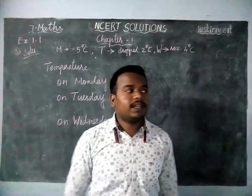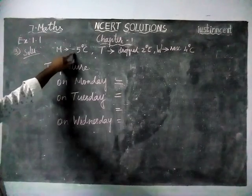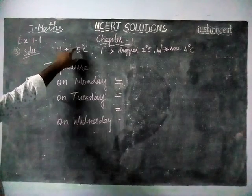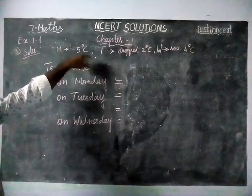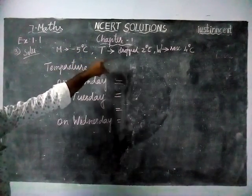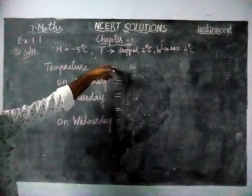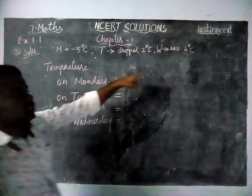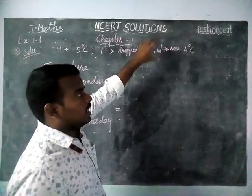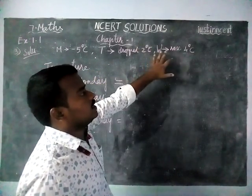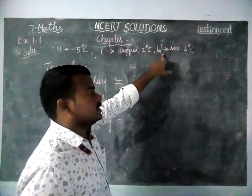Here at Srinagar, on Monday the temperature was minus 5 degrees Celsius, and on the next day it dropped by 2 degrees Celsius, and on Wednesday it rose by 4 degrees Celsius. They are asking: what is the temperature on Wednesday?